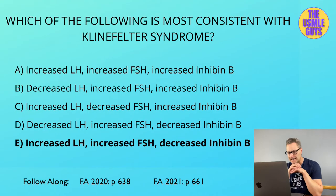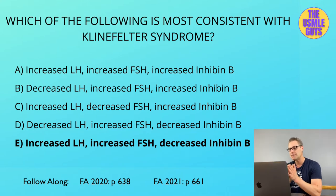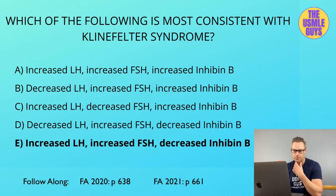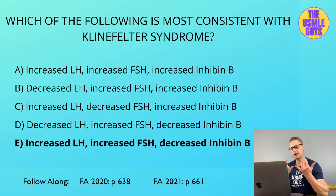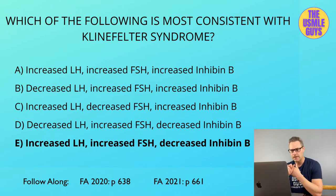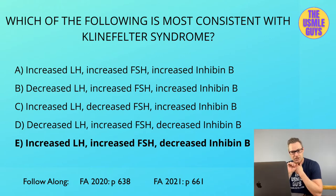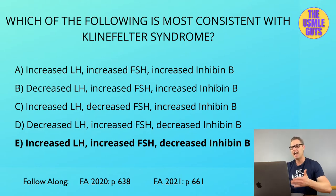The correct answer here is E. Let's look at Klinefelter syndrome — a condition in males where they receive an extra X chromosome, resulting in 47XXY. This results from non-disjunction during meiosis I or meiosis II, with maternal and paternal meiotic non-disjunction each accounting for around 50% of cases. A consistent finding is elevated FSH, because patients have dysgenesis of the seminiferous tubules, which lowers inhibin B, resulting in elevated FSH.